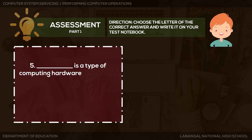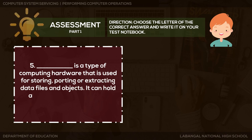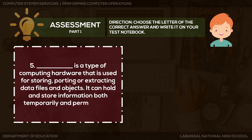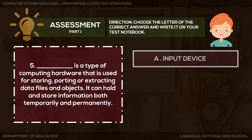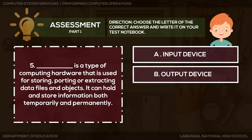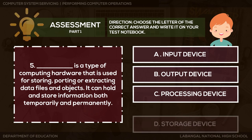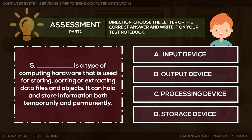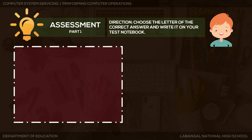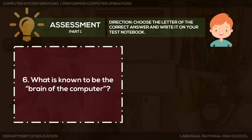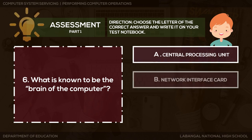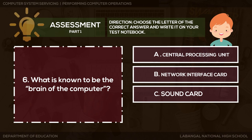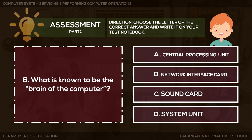Question 5: Blank is a type of computing hardware used for storing, hoarding, or extracting data files and objects — it can hold and store information both temporarily and permanently. A. Input device, B. Output device, C. Processing device, or D. Storage device. Question 6: What is known to be the brain of the computer? A. Central processing unit, B. Network interface card, C. Sound card, or D. System unit.